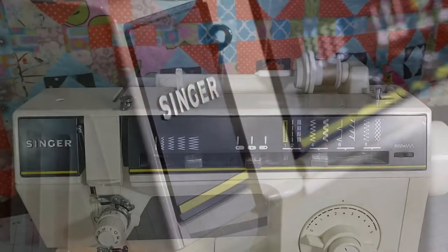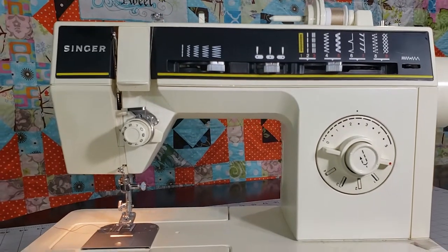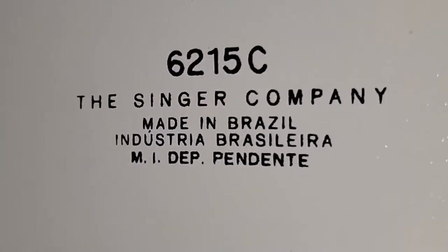This is the Singer 6215C sewing machine. In this video, I'll be showing you how to thread this machine, and after, I'll show you some troubleshooting tips if you are experiencing skipped stitches while zigzagging.